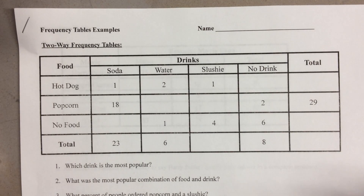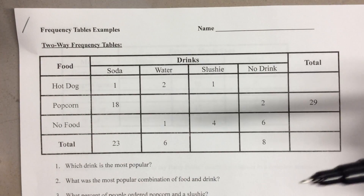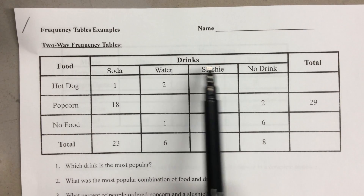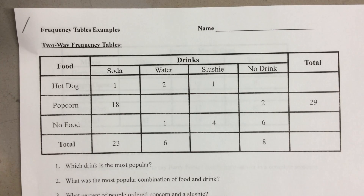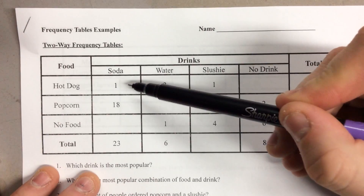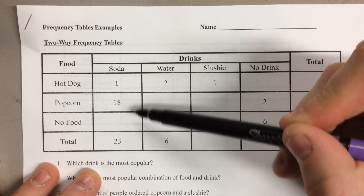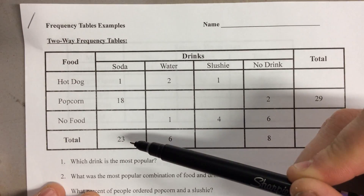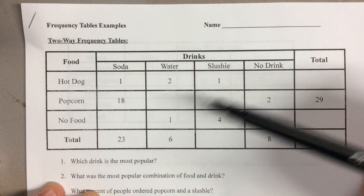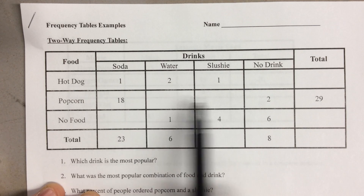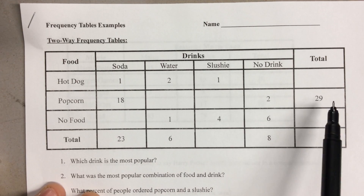The last thing you need to know about for statistics is two-way frequency tables. A two-way frequency table is a table of values where you're generally given a couple of choices and you try to find the combinations of things together. The key is that the choices, the boxes, will add up to a total at the bottom — each column adds up to a total at the bottom and each row adds up to a total on the right side.